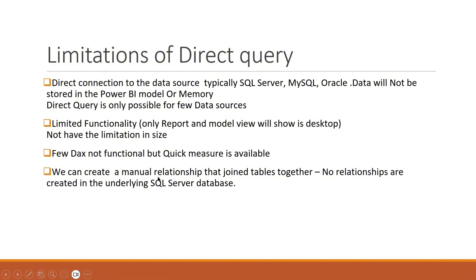We can create manual relationships that join tables together in direct query. No relationships need to be created in the underlying SQL Server database. Suppose we imported a table from SQL Server and there is no relationship between tables — in the model view we can go and create a relationship. That is possible in direct query, but in live connection that is not possible. There are many limitations for direct query and live connection.